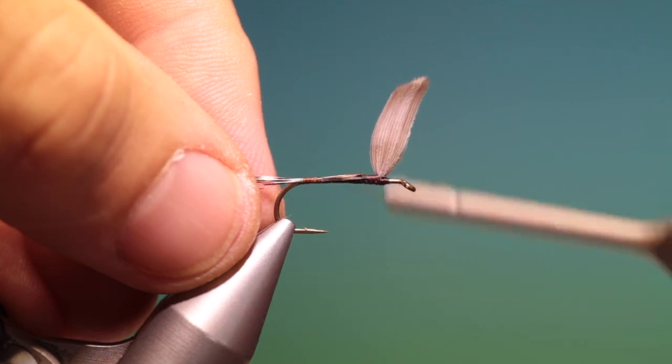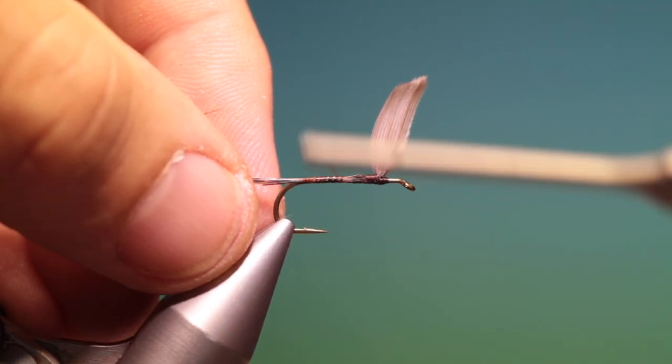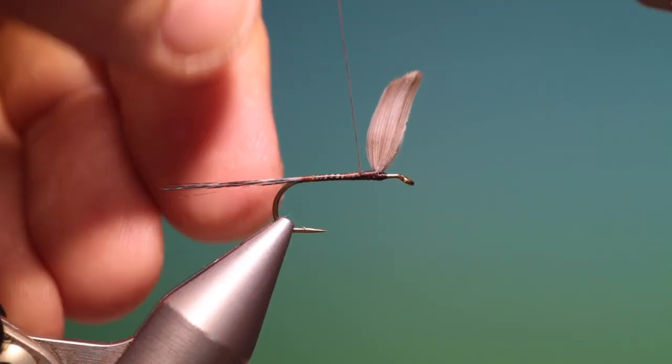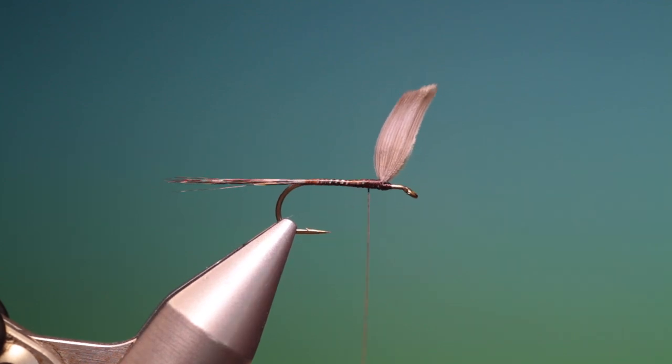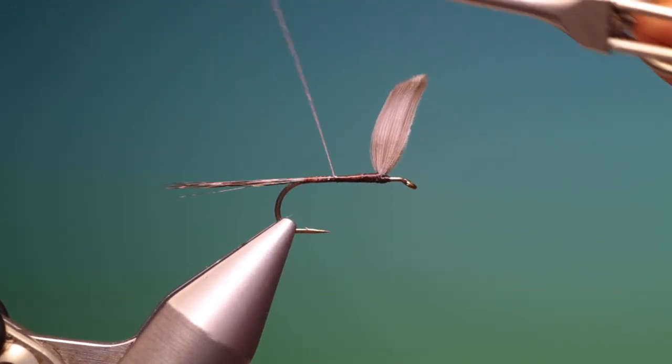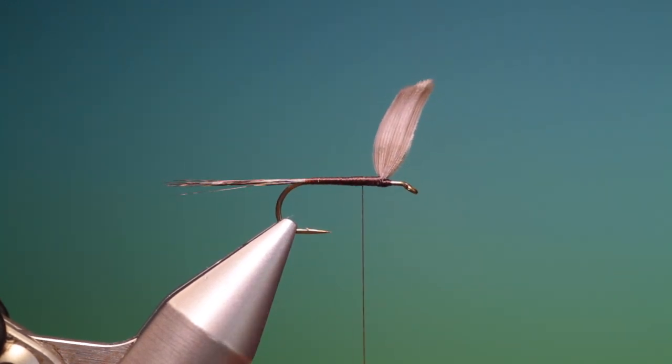Now we'll go forward. Over the body. Up to the wings. And then we'll come back and build up a nice little taper. That'll do us just fine there. Once we've got that nice taper we can go back to about there.